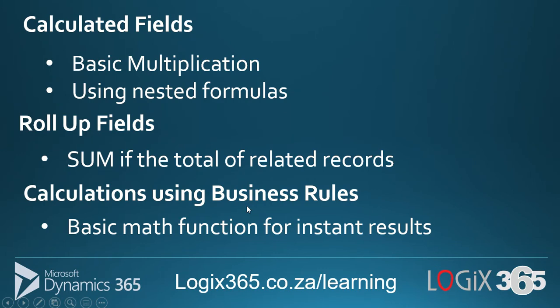I'm going to demonstrate basic multiplication, nested formulas, and rollup fields. A rollup field is used when you want a total sum of all related record values — for example, a job card with timesheets underneath it, each having a number of hours. To get the total hours on the main job card, you'd use a rollup field. With business rules, you can do basic math that calculates instantly, which is a nice feature.